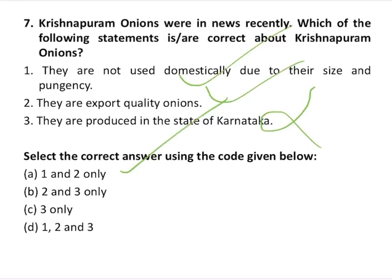Krishnapuram onions are a variety of export-quality onions from Andhra Pradesh. The variety is not popular in the domestic market and is mainly grown for exports. They are not used in kitchens due to their size and pungency. These onions are imported by Thailand, Hong Kong, Malaysia, Sri Lanka, and Singapore. Last year the government had banned export of onions when domestic prices shot up. They are also known as Krishnapuram rose onions.